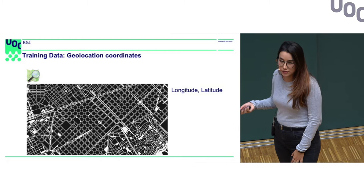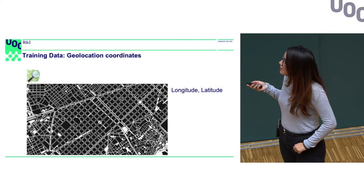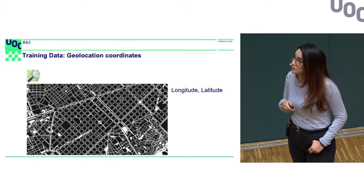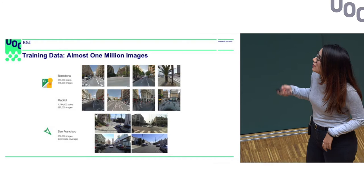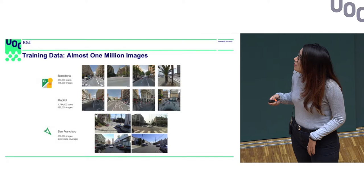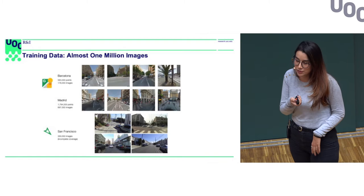To do this, we need training data. First of all, we collected data by extracting the geolocation coordinates of roads inside the city — longitude and latitude. With these coordinates, we extracted almost one million images of urban scenes from cities like Barcelona, Madrid, and San Francisco. We extracted these images from Google Street View and another source called Mapillary.